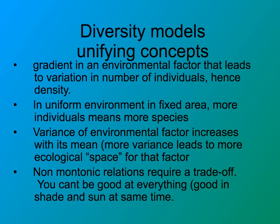All these different diversity models have some things in common. The reason diversity varies is that environmental factors vary over the surface of the earth, and that affects density of individuals and species. In any fixed area, the more individuals, the more species are likely present. Greater averages lead to greater variance, so larger niches and more ecological space exist. And there are trade-offs — species good at one thing may not be good at another; no species can be good at everything at the same time.